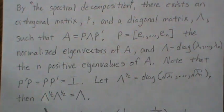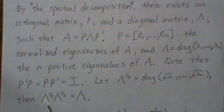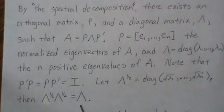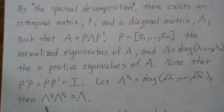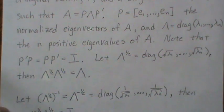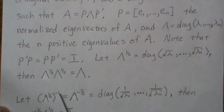Then it can be shown that lambda to the one-half times lambda to the one-half is lambda. All these are diagonal matrices, and you get the lambda matrix back.